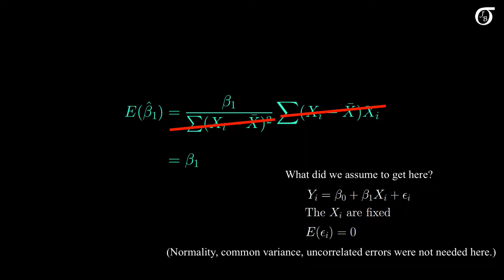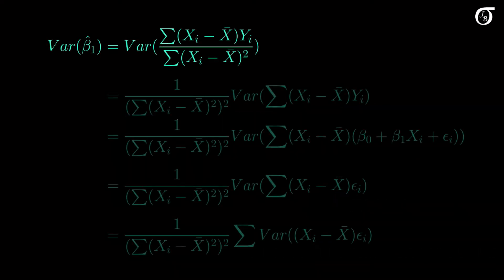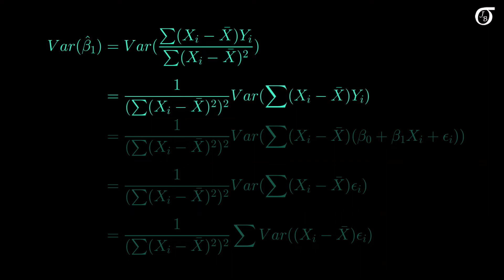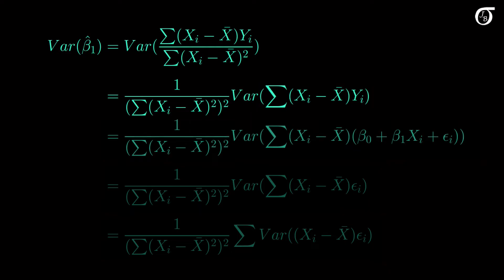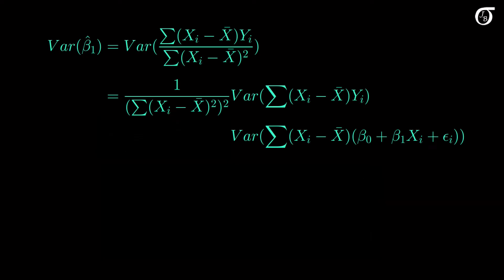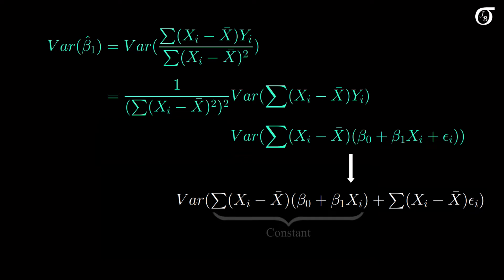Now let's derive the variance of beta1 hat, which is the sum of products over the sum of squares of x. First note that the denominator is a sum of fixed values of x and is a constant — not a random variable. We can pull that outside, but remember when we multiply by a constant, the variance gets multiplied by the square of that constant. Now we're dealing with the variance of this sum. Let's substitute our model expression for y: beta0 plus beta1 times x plus epsilon. We can split up this sum — the first term being nothing but constants, an additive term with no random variable involved, and thus that additive term does not affect the variance. We can cancel that out.